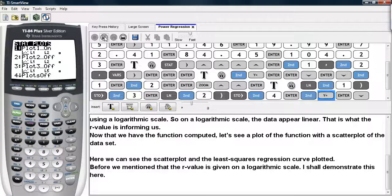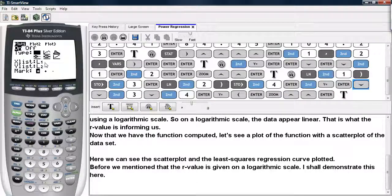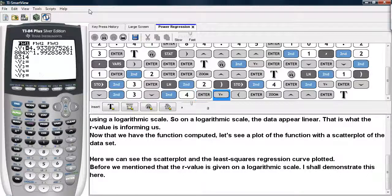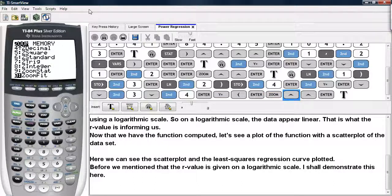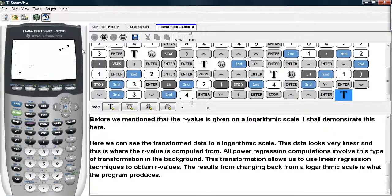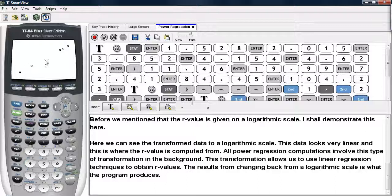And if we go under the stat plots menu and change the X list to L3 and the Y list to L4 and then plot these results, what we're going to see is a linear looking data set. Now I've deselected the original plot so that it doesn't show up in the window. And here we can see that our five data values appear very linearly. They are virtually on a straight line. And this is what it means for a power regression on a logarithmic scale.